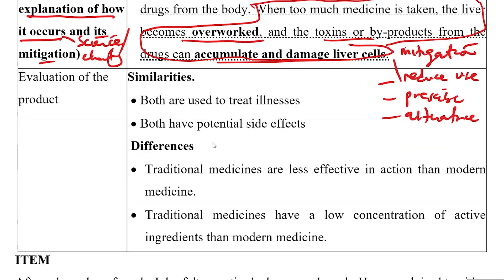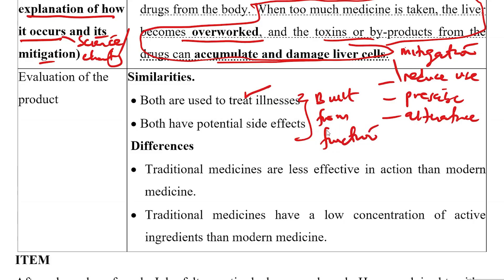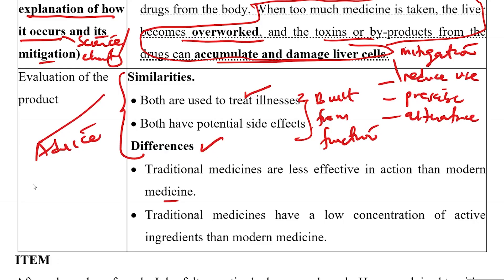For the evaluation part, you must evaluate using similarities and differences. Similarities come from the function — for example, both treat illness, or both relieve pain, because whether traditional or modern they do that. For differences: traditional medicine is less effective in action than modern medicine. When asked to advise, the learner must make a decision and support one of them.